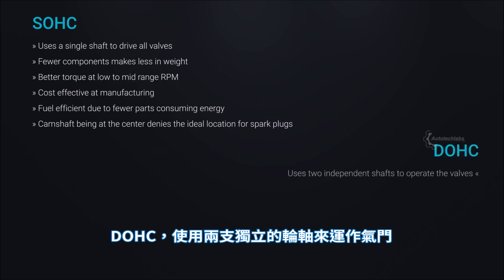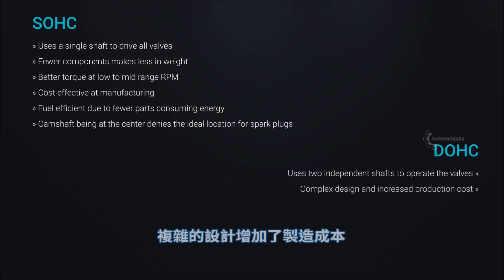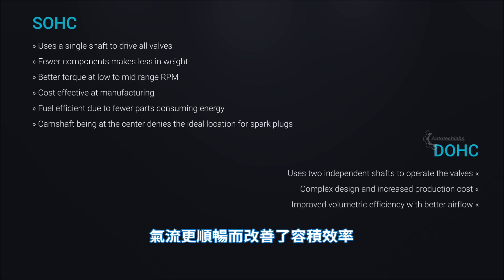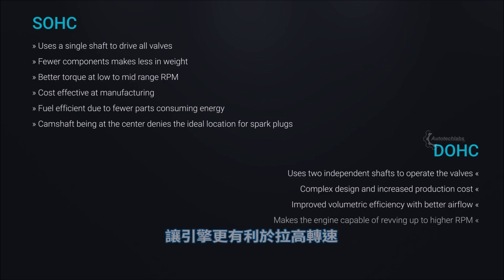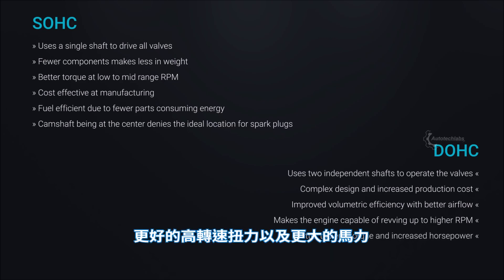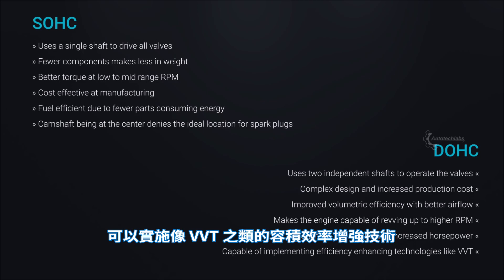DOHC uses two independent shafts to operate the valves, resulting in a complex design and increased production cost. It provides improved volumetric efficiency with better airflow, making the engine capable of revving up to higher RPMs. It delivers better top-end torque and increased horsepower, and is capable of implementing efficiency-enhancing technologies like Variable Valve Timing (VVT).